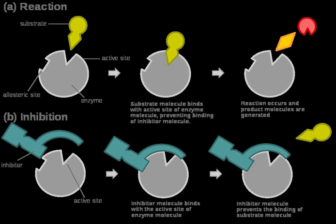Vmax remains the same because the presence of the inhibitor can be overcome by higher substrate concentrations. The apparent Km — the substrate concentration needed to reach Vmax/2 — increases with the presence of a competitive inhibitor. This is because the concentration of substrate needed to reach Vmax with an inhibitor is greater than the concentration of substrate needed to reach Vmax without an inhibitor.